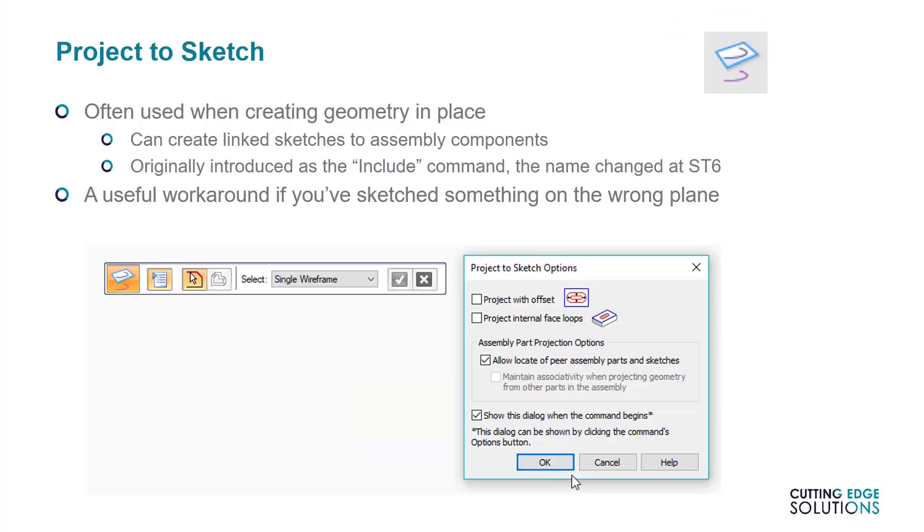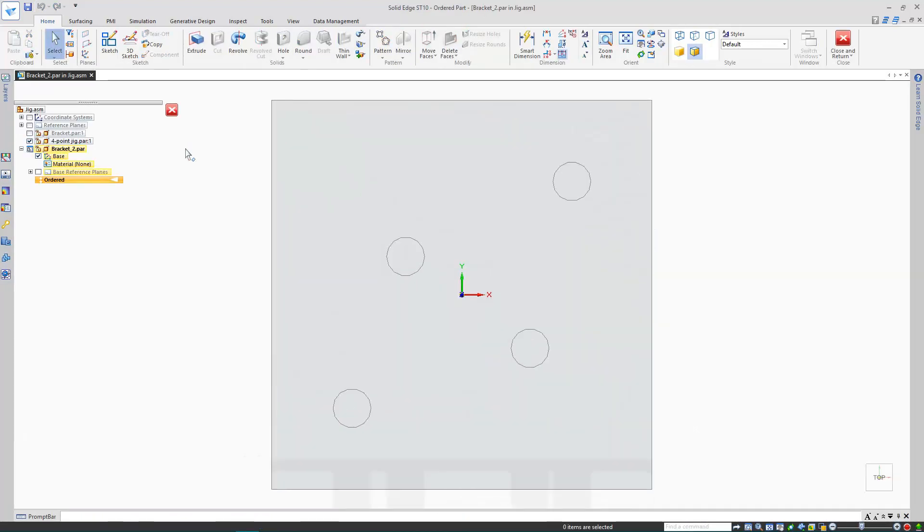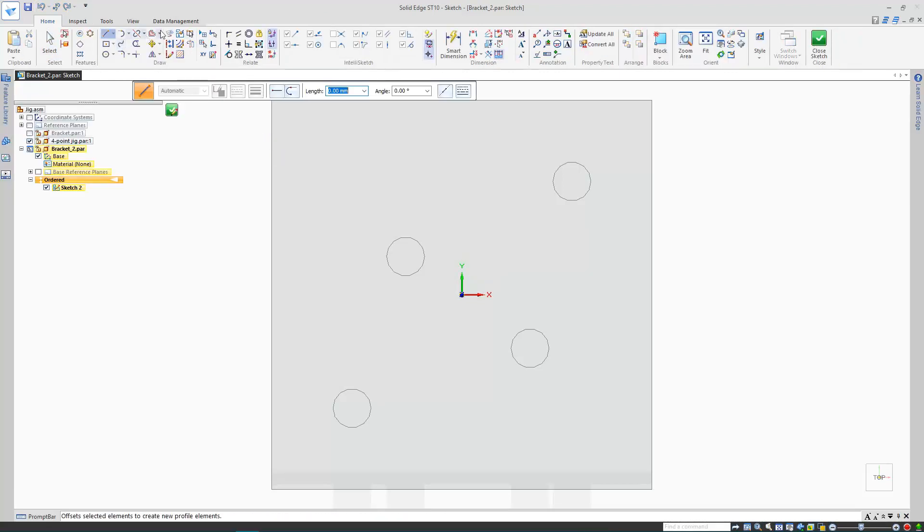The Project to Sketch command, or as it was previously known, the Include command, has two main uses. One of which is creating sketch profiles when you're editing into a part from an assembly. This command can be used to borrow lines, chains, and entire profiles from other parts. And if the option maintain associativity is checked on while doing this, it's greyed out here because these options are from the normal part environment, not in-place editing, you can introduce assembly linking between parts so that if one part changes, the second updates its sketches accordingly.